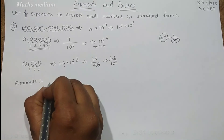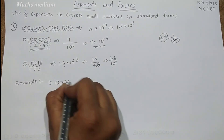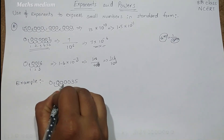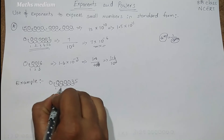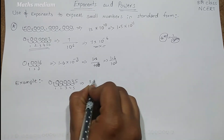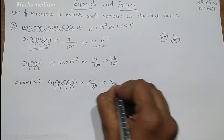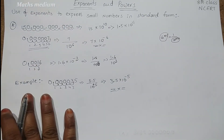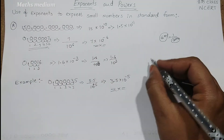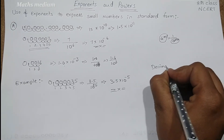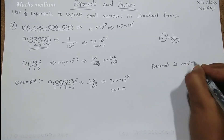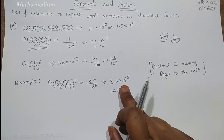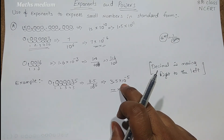If you take an example problem like 0.000035, you will get a better understanding. We are going to make this into standard form. Counting the decimal places: 1, 2, 3, 4, 5 — we can write it as 3.5 divided by 10 power 5, so in standard form: 3.5 into 10 power minus 5 is the answer. The tip is: when the decimal is moving right to left, count those places and add that many negative exponents to the 10.